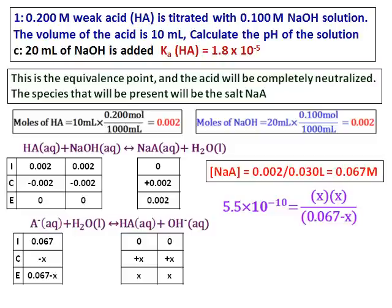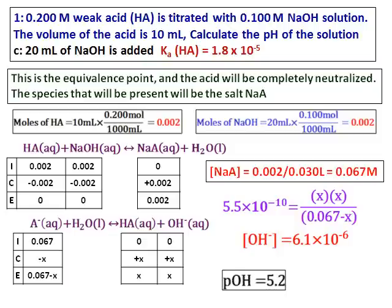Substitute all the values, use the small K approximation, and get the value of the hydroxyl ion. Calculate the value of pOH, and from the pOH, calculate the pH. The pH of 8.8 is the appropriate value expected for a weak acid–strong base titration.